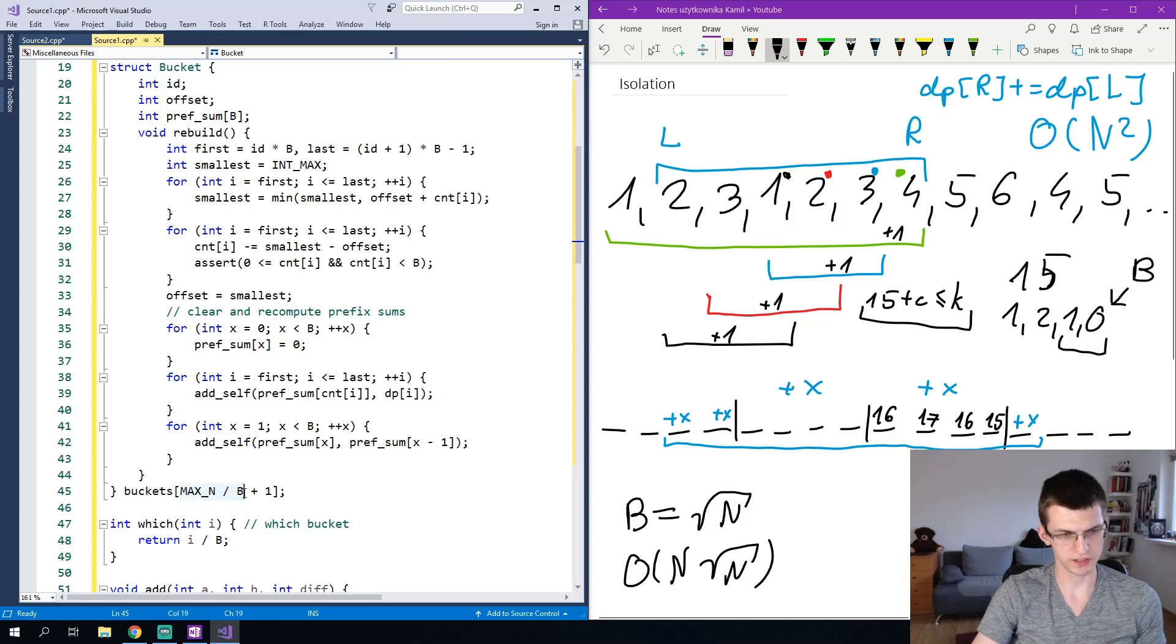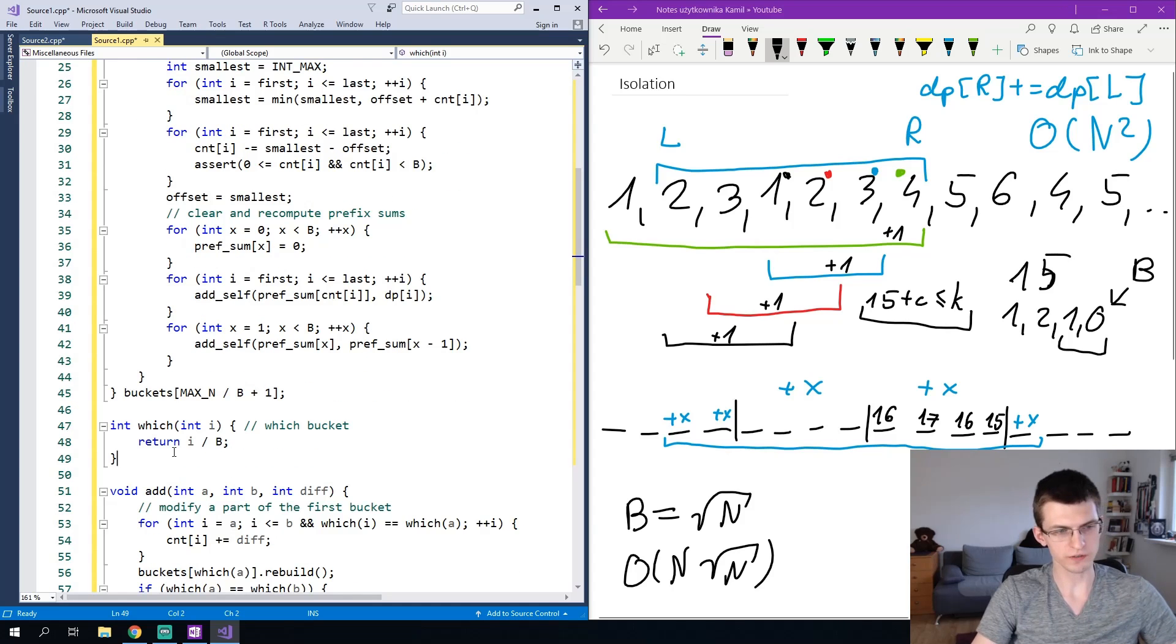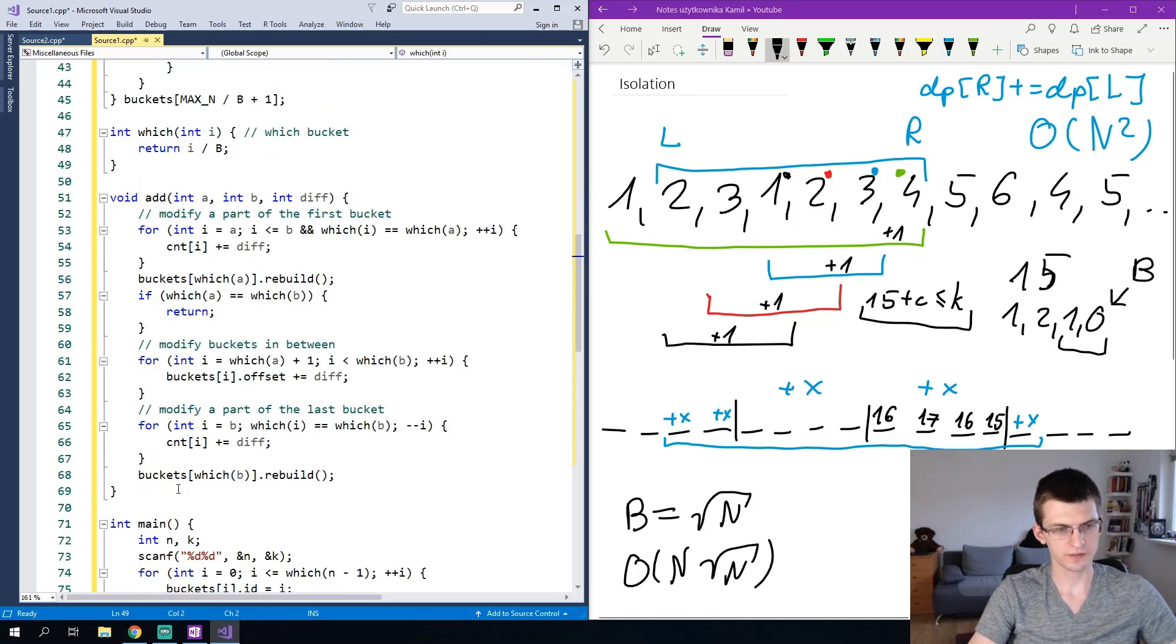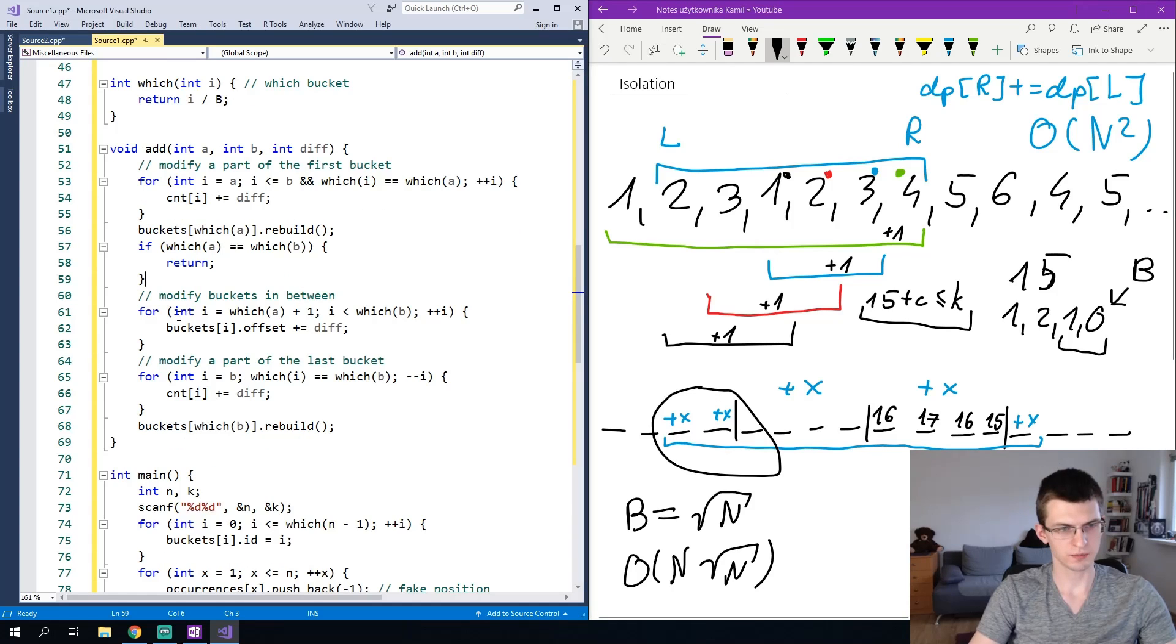And the number of buckets we need is max n divided by b plus 1. Which of i is a simple function that given index returns the id of bucket responsible for this index. And function add, instead of iterating from a to b just linearly, it iterates over elements in the first bucket that was here, it was this one. Then modifies buckets in between and then eventually the last bucket. Each of these three parts is in square root of n time.